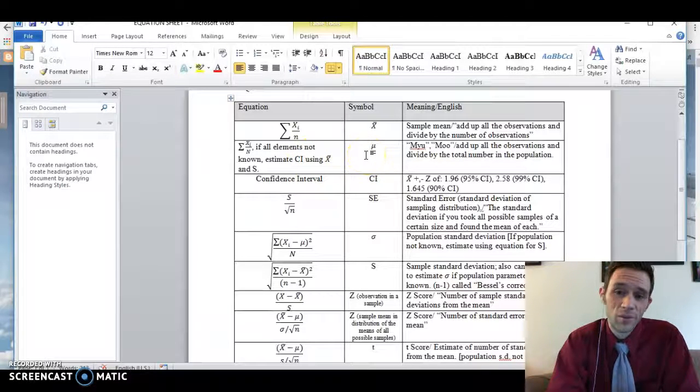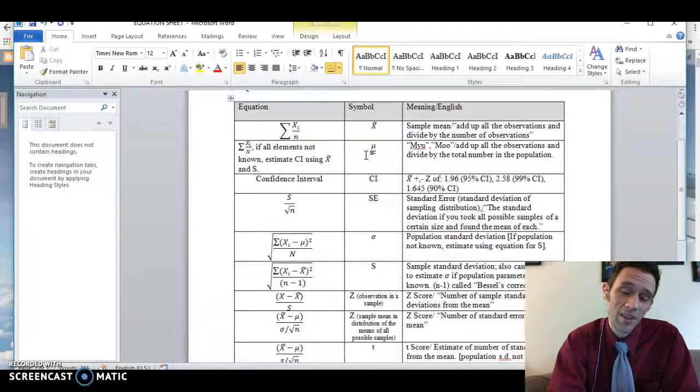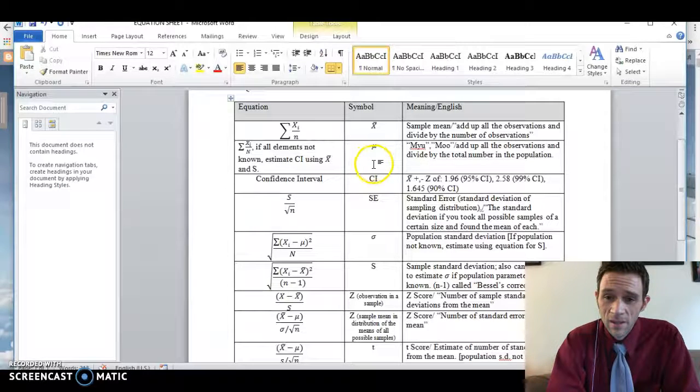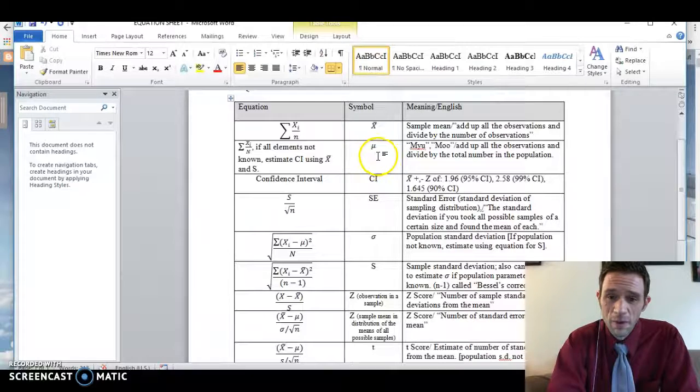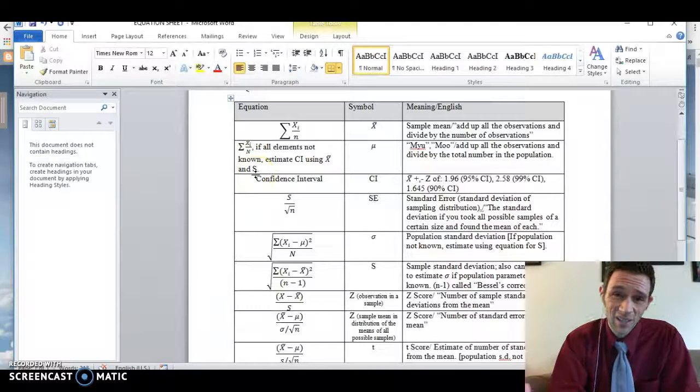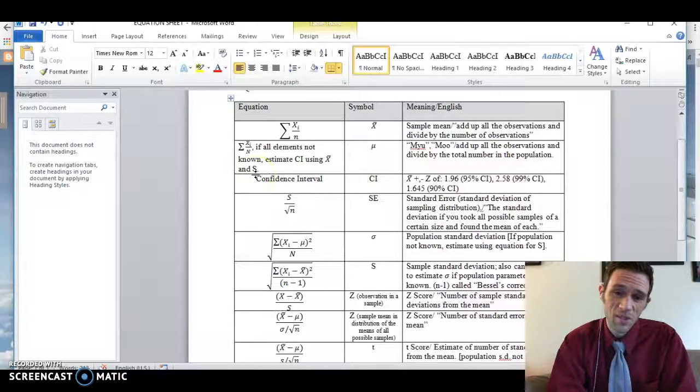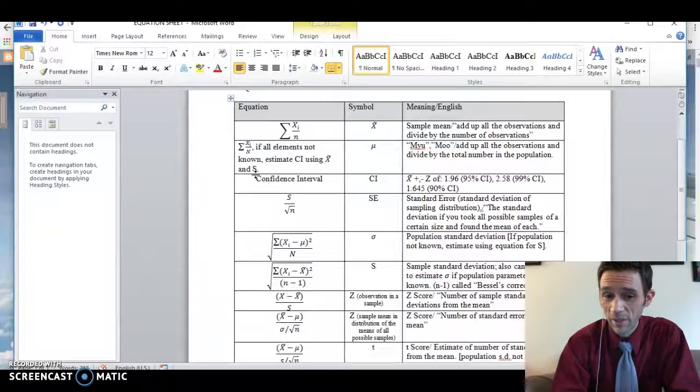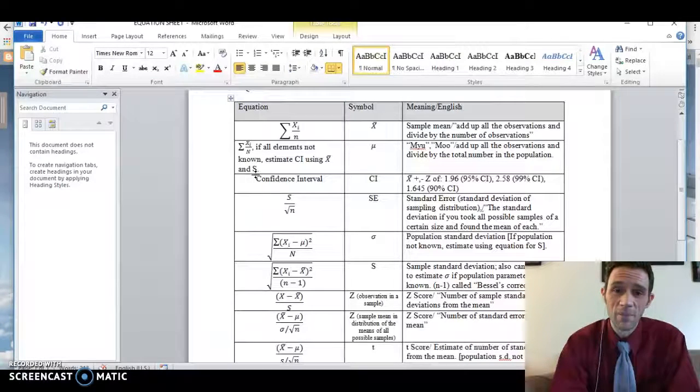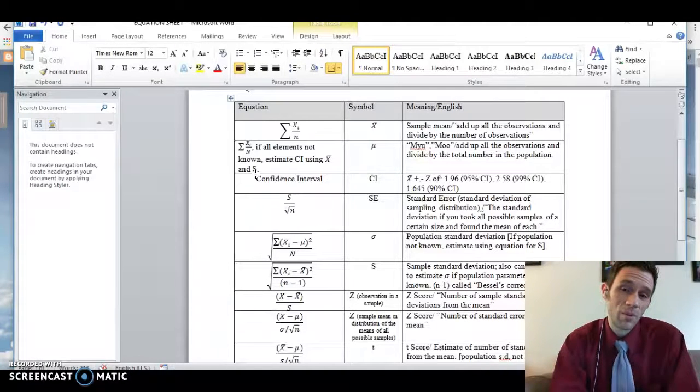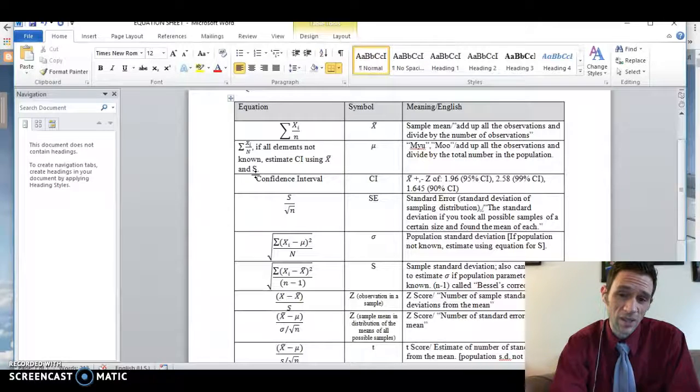Then we have mu or what some people call mu. I think they're afraid of it sounding like a cow. But mu. This is the population mean. So what we have is the same equation with large N instead of small n. And the vast majority of you know that this large N means all of the elements or all the people in the population. So we add up everybody and divide by that total number. And it's just like the mean except it's the mean for the entire population.